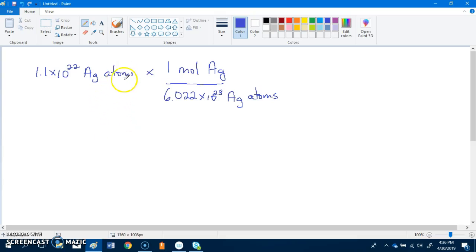Hi and thank you for the question. Here's the equation that we were given: 1.1 times 10 to the 22 AG atoms times 1 mole of AG over 6.022 times 10 to the 23. We are finding moles of AG.